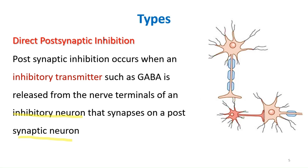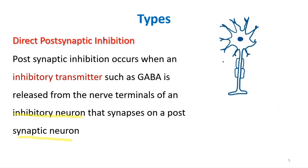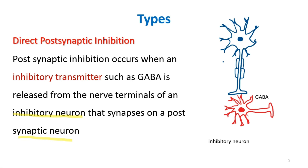To draw the diagram, show a neuron synapsing onto an inhibitory interneuron that is releasing GABA. Because the neurotransmitter is GABA, it causes inhibition of the postsynaptic neuron. This is plain direct postsynaptic inhibition.